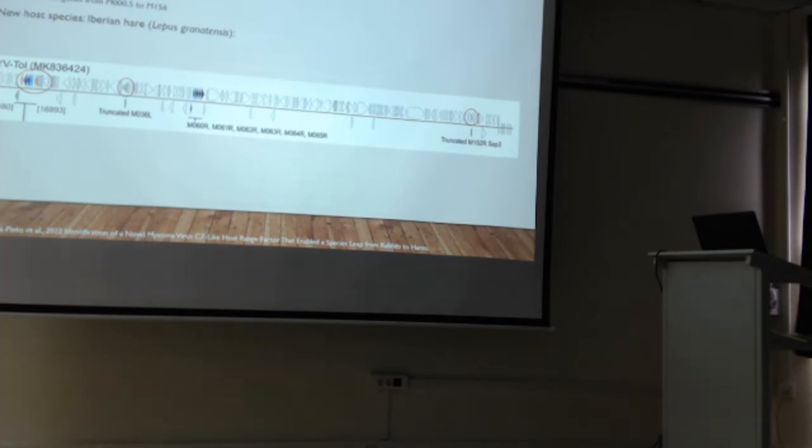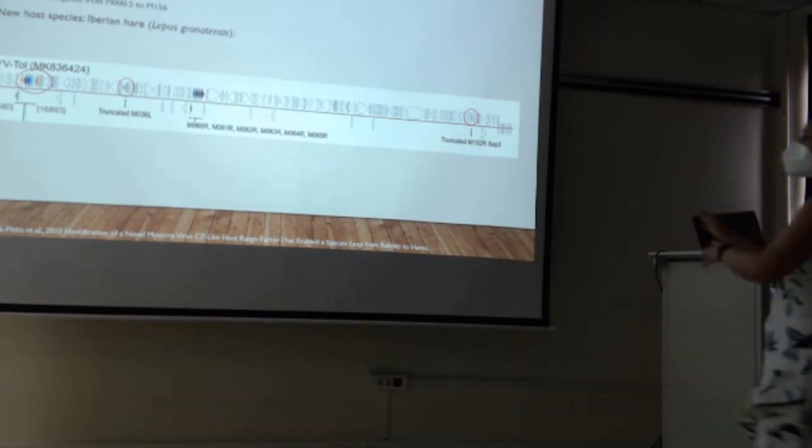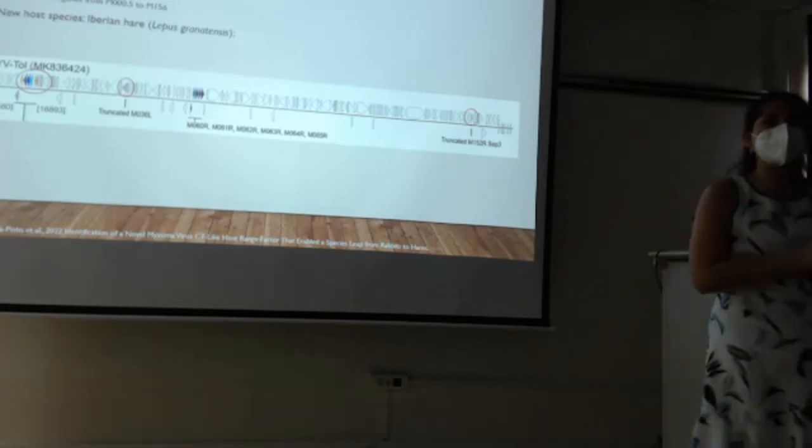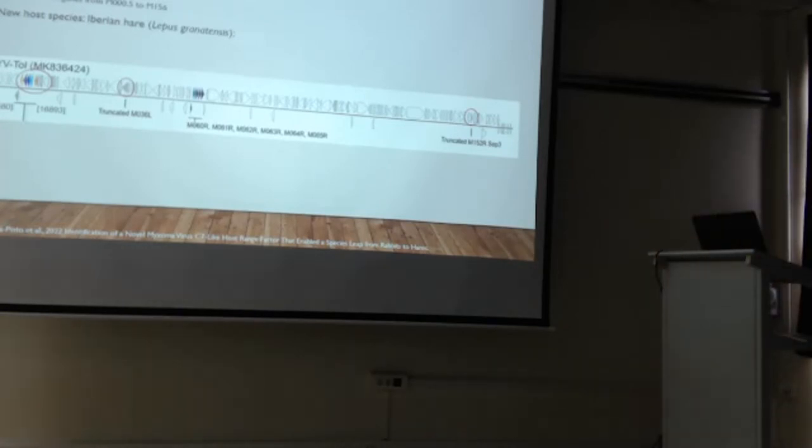This is a fairly large genome composed of 161 kilobase pairs that encode for 171 open reading frames with over 100 genes ranging from M000.5 to M156. Now, with this species jump, it changed host, the new host being the Iberian hare. Here you see a picture of the whole genome. Each arrow has a different open reading frame, and there were three key mutations detected. The first one was an insertion of 2.8 kilobase pairs into gene M009. There's also a truncation of gene M036 due to the addition of four adenines, and a truncation of gene M152 due to the insertion of a cytosine.